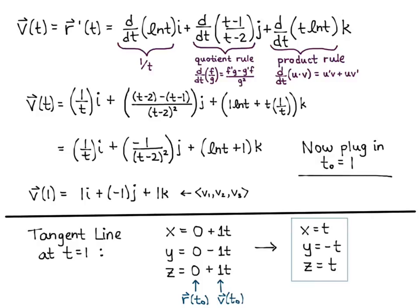So that's how you'll always go about finding the tangent line to a curve, is find the position at that point and find the velocity at that point. The position gives you the point on the curve that your tangent line goes through. And the velocity at that t value gives you the direction vector.